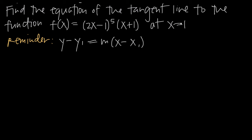Remember that the tangent line is just the line that intersects the graph at exactly one point, which is different than the secant line, which will intersect the graph at two or more points. The tangent line just skims across the function, intersecting it at exactly one point. That one point we're interested in is x equals 1, so we're looking for the equation of the tangent line at x equals 1.